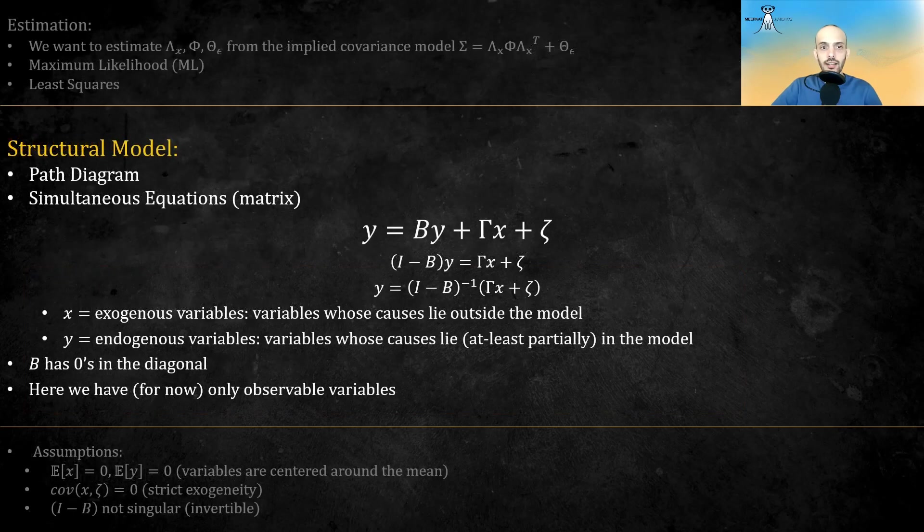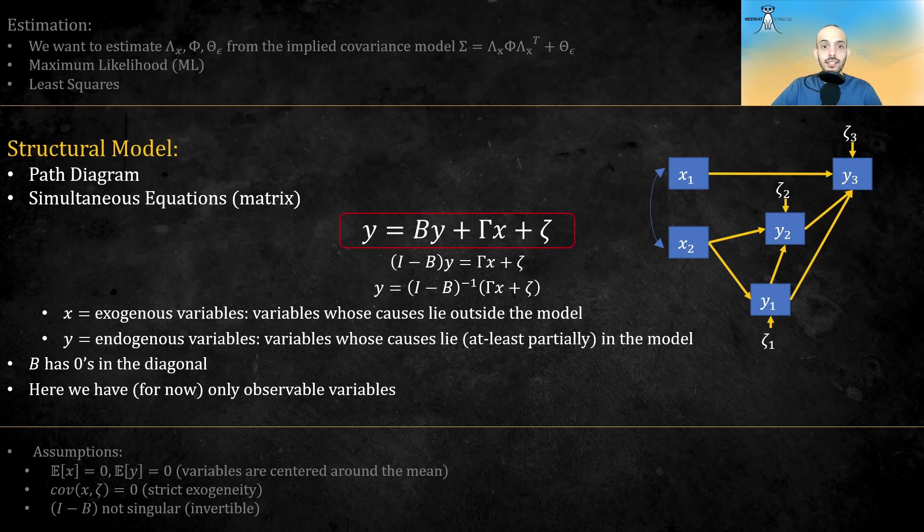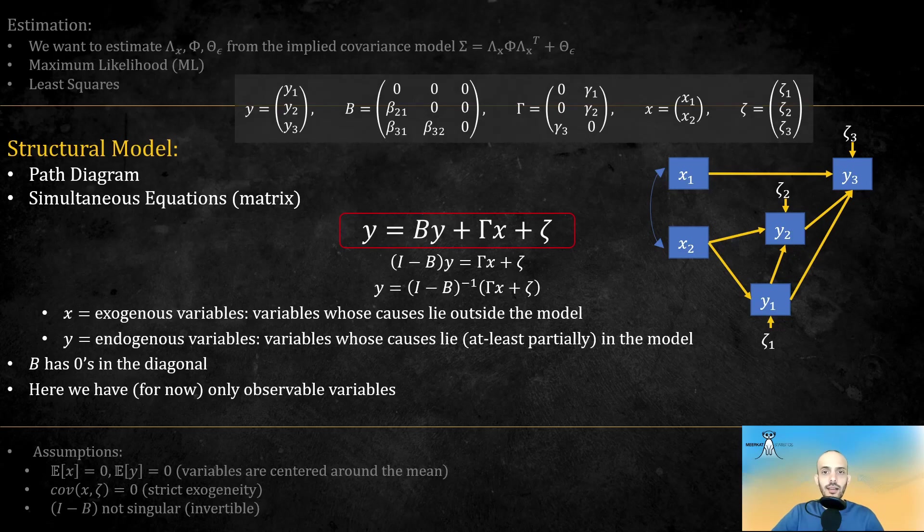The second part of SEM is the structural model. Here's a path diagram, which represents one possible structural model. We have x2 affecting y1, x2 and y1 affecting y2, and x1, y1, and y2 affecting y3. You can write this diagram in matrix notation like this. y equals b times y, plus gamma times x, plus zeta. Notice that the arrows in the diagram correspond to the regression coefficients. The arrows between y's are the betas here, and the arrows from the x's to the y's are the gamma.